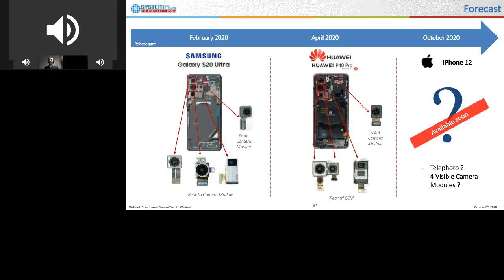To recap all information, we have seen three big points. The number of cameras per smartphone has increased these last five years. Sony is the main CIS manufacturer today in high-end smartphones for the larger OEMs, with their copper-copper hybrid bonding technology. And the telephoto or periscope camera has appeared in some smartphones. Maybe we will find it in the next iPhone, but we must wait a little for that.